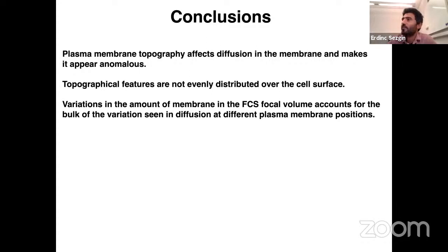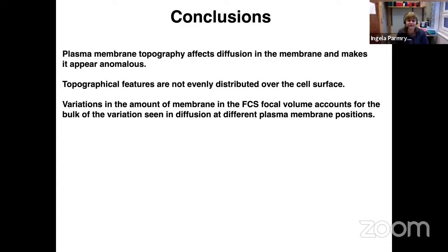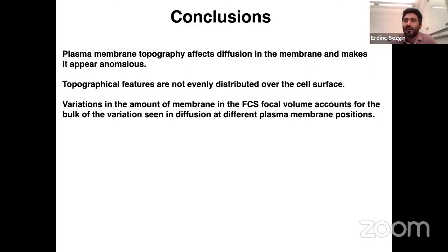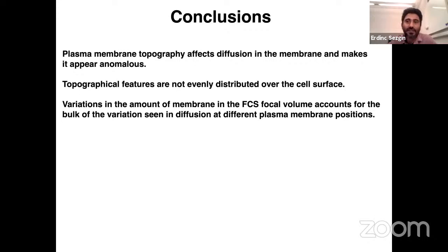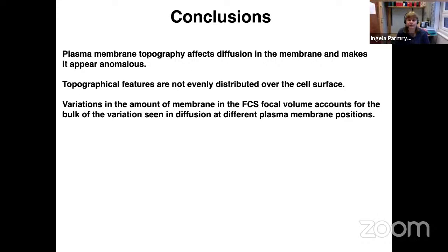A question about whether ion flow from ion channels could have an effect on topography measurements: I'm not entirely sure what's being asked, but I would interpret it as whether ion channel activity could create topographical differences that would change FCS measurements. I don't know for certain, but I would say it's possible — actin is definitely one of the big players in forming membrane ruffles, and calcium changes are likely to affect such processes.